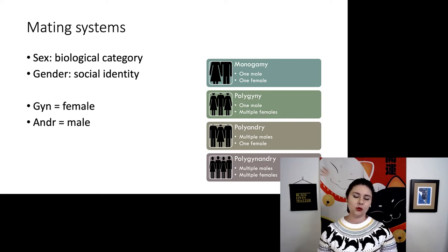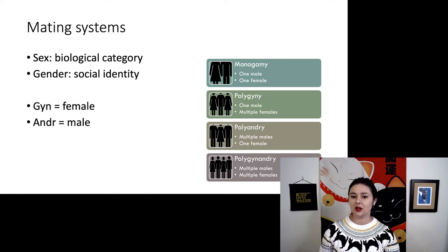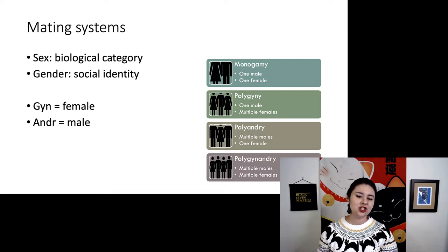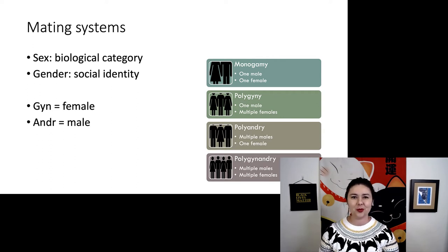Monogamy — that's one marriage, one male, one female. Polygyny, or many females, is a one-male, multiple-female system. Polyandry is multiple males but one female. Polygynandry is multiple males and multiple females. So let's talk about these one by one.